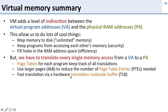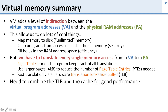In order to make translation fast, we have a hardware translation look-aside buffer — the TLB — which is a small cache that keeps the most recently used page table entries to do really fast translation. We also need to be able to work with the TLB and the cache together for good performance.